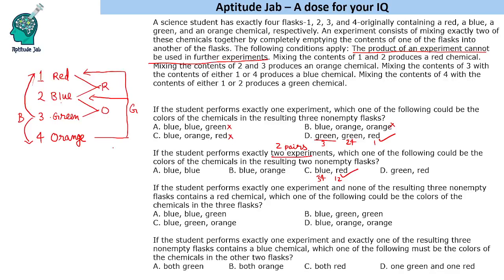To confirm by elimination: mixing 1+3 gives blue, and 2+4 gives green - so blue, green is possible but that's a different option. Mixing 3+4 gives blue and 1+2 gives red - confirming blue, red. For green, red: mixing orange and red gives green, and blue plus green gives orange - so green and orange are possible but green and red are not. Therefore blue and red is the only valid answer among the options.